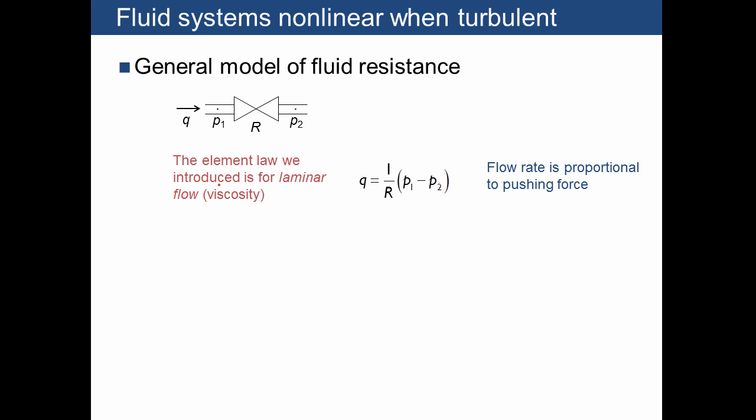Where do non-linear systems occur? A very common example is fluid resistance. We gave the formula q equals 1 over R times (p1 minus p2), and this is actually a law for fluid resistance for laminar flow where viscous terms dominate. This just says that the flow rate is proportional to the pushing force. The pressure difference is actually how hard we're pushing on the fluid in one direction.